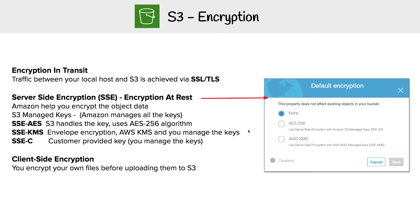Then you have customer-provided keys — SSE-C — where you provide the key yourself. There's no interface for it; it's a bit more complicated. The C stands for customer-provided. Then you have client-side encryption — there's no interface for that either. It's just you encrypting the files locally and then uploading them to S3.